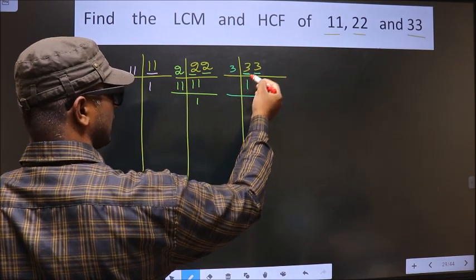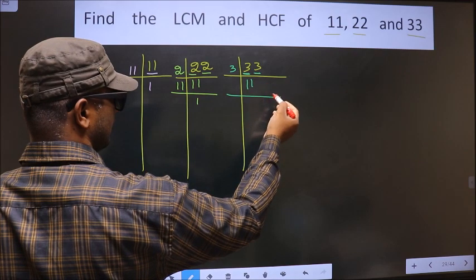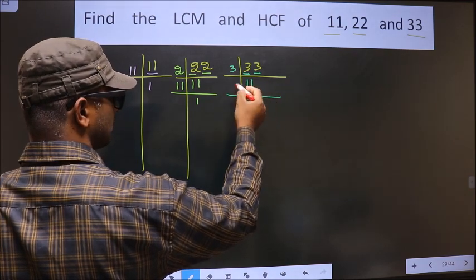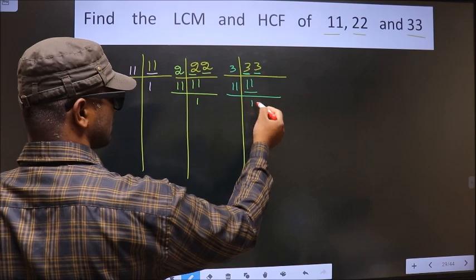We have 3 again. So we write 1 again. Now here we got 11. 11 is a prime number. So we take 11 once, 11.